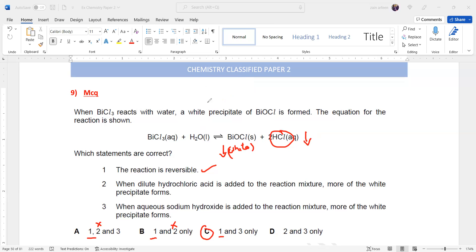The equilibrium will shift towards the right-hand side, so the amount of white precipitate will increase. Since statement two is wrong, you can identify that A and B are wrong because statement two is not correct. So we are left with only C as the valid answer.